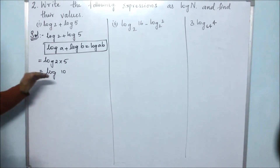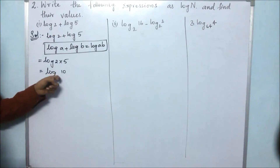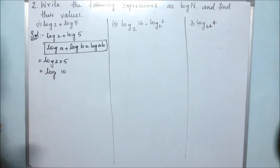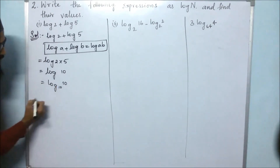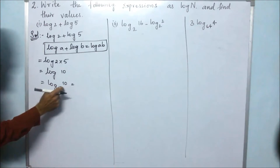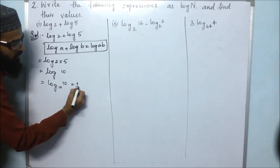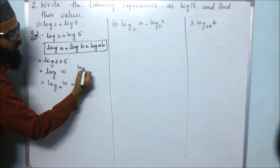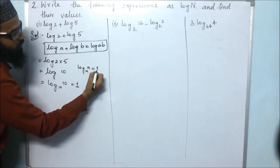We have to remember that whenever we have log 10, the base will also be 10. So log 10 with base 10 — whenever the value is the same as the base, it equals 1. This is the formula: log a base a equals 1.